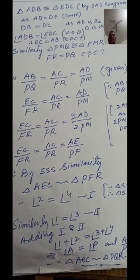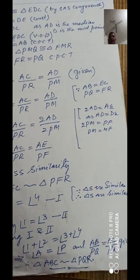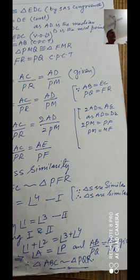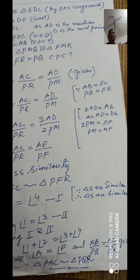Adding the two results: angle 1 + angle 2 = angle 3 + angle 4, which means angle A = angle P. Since angle A = angle P and AB/PQ = AC/PR (given), by SAS similarity triangle ABC is similar to triangle PQR. This completes the proof of question 14.